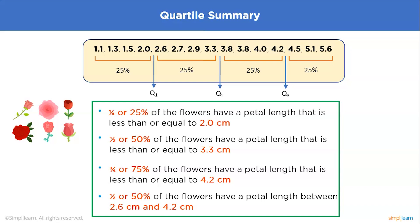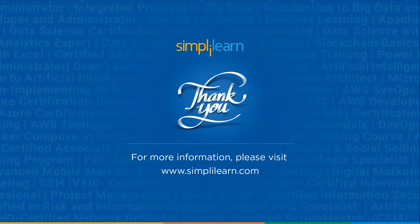So what do these values signify? 25 percent of the flowers have a petal length less than or equal to 2.0 cm. 50 percent of the flowers have a petal length less than or equal to 3.3 cm. 75 percent of the flowers have a petal length less than or equal to 4.2 cm. And 50 percent of the flowers have a petal length between 2.6 cm and 4.2 cm.